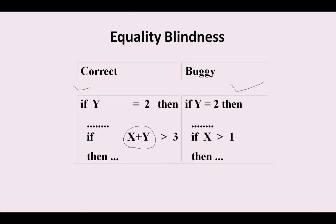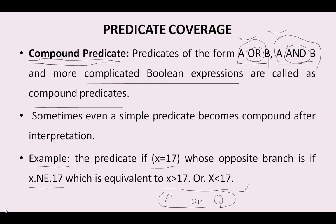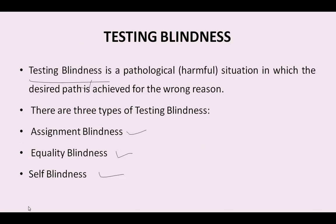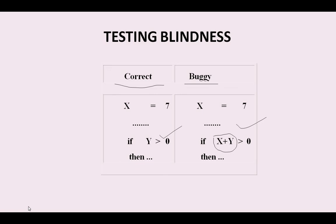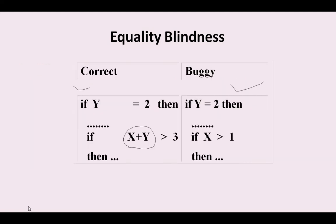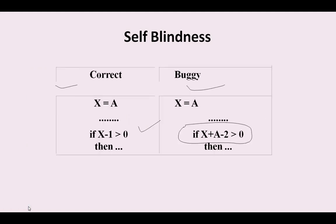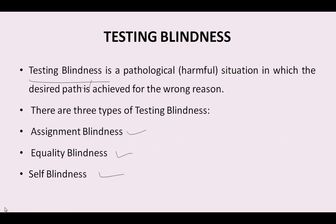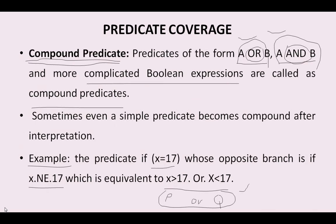This is about the various kinds of testing blindness: assignment blindness, equality blindness, and self blindness — this is nothing but predicate coverage. To summarize: compound predicate, predicate coverage, the three types of testing blindness — assignment blindness where the assigned value works for both buggy and normal situations; equality blindness where a selected value works for both correct and buggy predicates; and self blindness where assignment of a variable makes it work for both conditions. Care must be taken while working with assignment and equality statements. This is all about predicate coverage. In the coming video we will talk about other things. Thank you for watching.